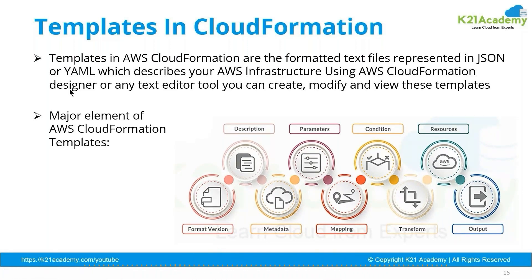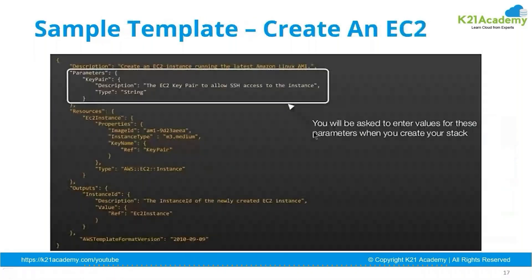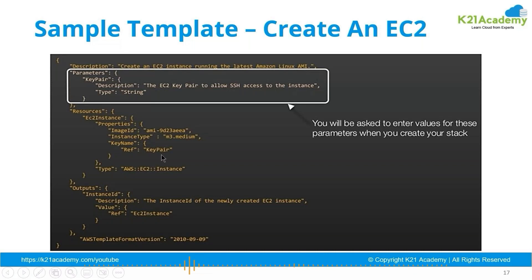A template majorly consists of version, description, metadata, mappings, and conditions. If required, you can also use parameters. For example, in this YAML code, a parameter named 'key pair' is defined, requiring the user to provide a key pair name for launching an EC2 instance. The M3 medium machine with the specified AMI ID will use the key pair provided by the user while running the template.